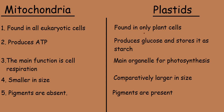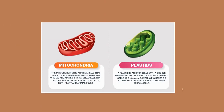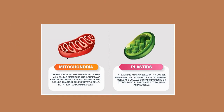In order to give clear clarity regarding this topic, let me show a diagram of mitochondria and plastids. This is a mitochondria and this is a plastid. Mitochondria is an organelle that has a double membrane and consists of matrix and cristae. It occurs in almost all eukaryotic cells, both plants and animals. A plastid is an organelle with a double membrane that is found in some eukaryotic cells and usually contains pigments or stores food.